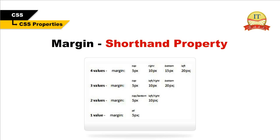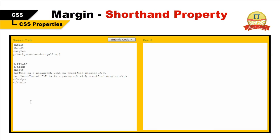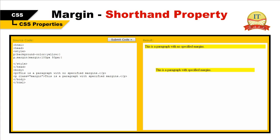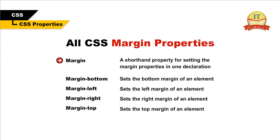Margin shorthand property. To shorten the code, you may specify all the margin properties in one property — this is called a shorthand property. The shorthand property for all the margin properties is 'margin'. The margin property can have from 1 to 4 values. All CSS margin properties: margin (shorthand for setting margin properties in one declaration), margin-bottom, margin-left, margin-right, and margin-top, each setting the respective side's margin of an element.